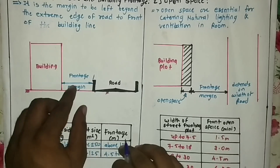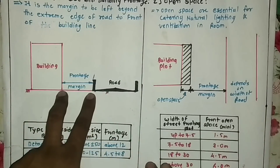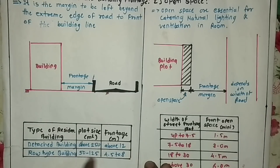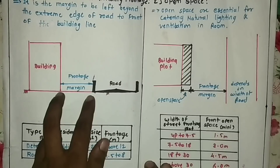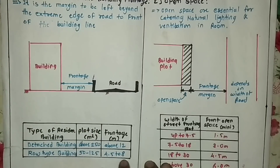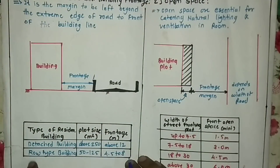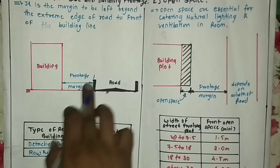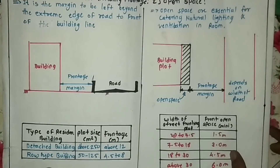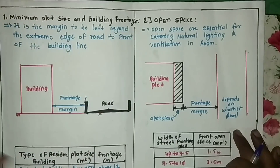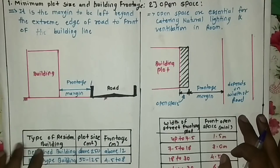For a detached building with area more than 250 square meters, you have to keep a frontage margin of more than 12 meters. Similarly, for a row house type building with area 50 to 125 square meters, you have to keep a frontage margin of 4.5 to 8 meters. These are the rules for minimum plot size and building frontage.